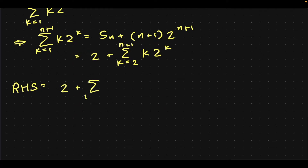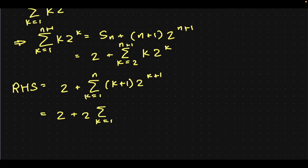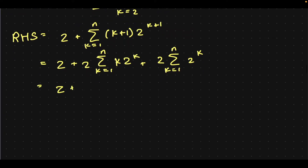We can change the index of the summation to run from k equals 1 to n, which will result in k plus 1 as the summand. With that out of the way, we can kind of simplify this. We will have 2 times sum from k equals 1 to n of k times 2 to the k, plus 2 times sum from k equals 1 to n of 2 to the k. This term, as I can point with this laser pointer, is just Sn, the way we defined it on top.